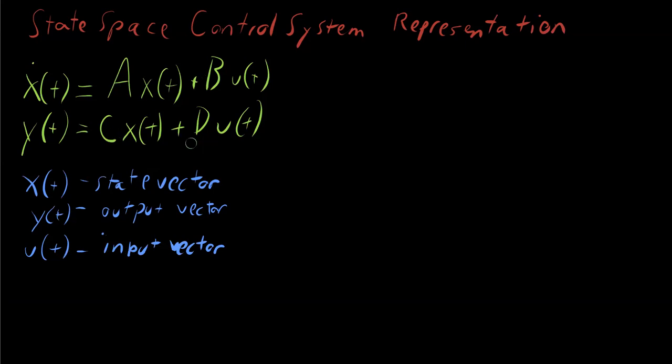Then we have the matrices A, B, C, and D. Each one represents something. A is our state matrix. This is what updates x of t and provides us with our first guess of the derivative of x of t.